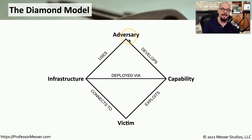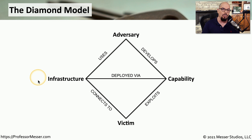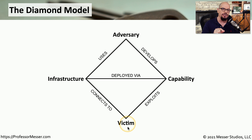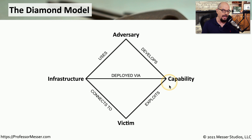The adversary is obviously going to be the attacker. Capability is what the attacker uses — this could be malware, a hacker tool, or some other type of exploit used against your systems. The infrastructure describes what was used to gain access, such as IP addresses, domain names, email addresses, or other parts of your infrastructure. And lastly is the victim — this could be a person, an asset on the network, or a series of email addresses. There is a relationship between each of these points on the diamond: an adversary uses the infrastructure, the adversary develops a capability, the victim is exploited by that capability, and the victim connects to the infrastructure.